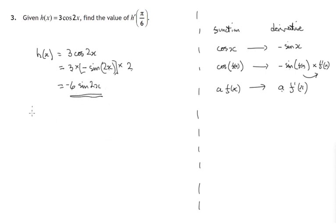Now we have to evaluate that when x is π/6. Remember here in paper 1, so there's no calculators allowed. So it's negative 6 times the sine of twice π/6. That's now the angle.